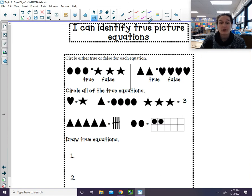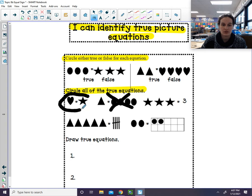We're going to take a look at your math sheet that you will be working on today. The learning target says I can identify true picture equations. Circle either true or false for each equation. True means it's correct, false means it's wrong. Circle all of the true equations. I suggest you circle it if it's true and put an X if it's not. For example, this one - one, and then one, two, three, four - it's not true, so I would put an X through it. But this one, one and one, I would circle that.